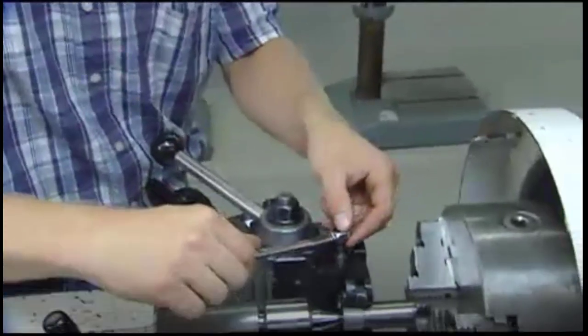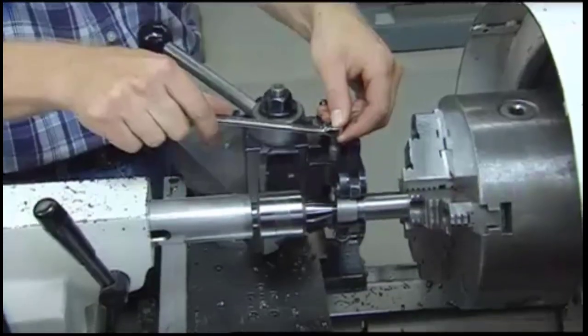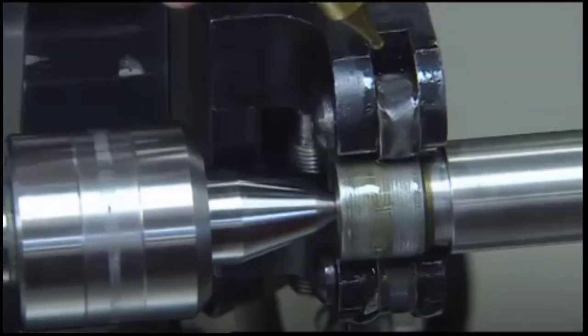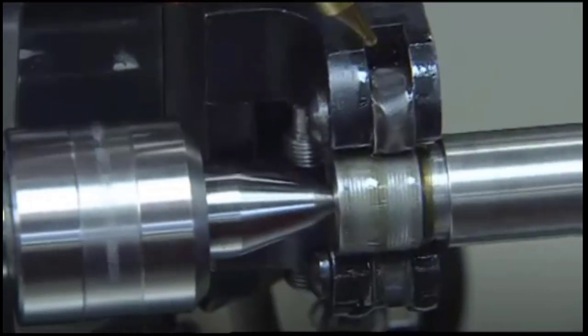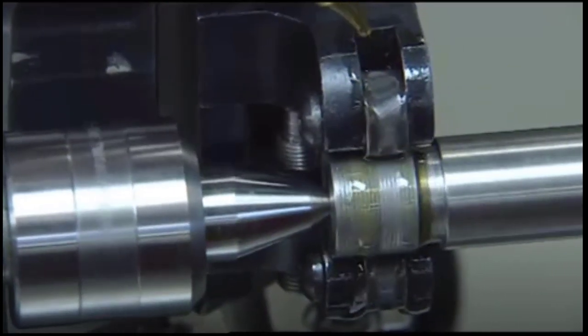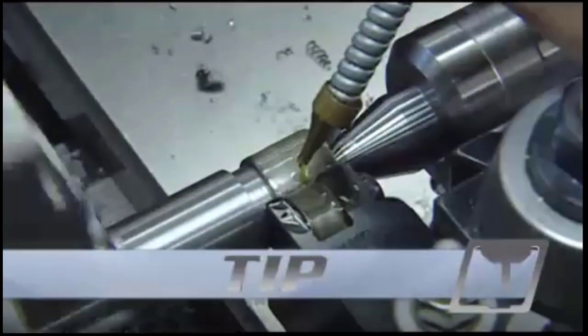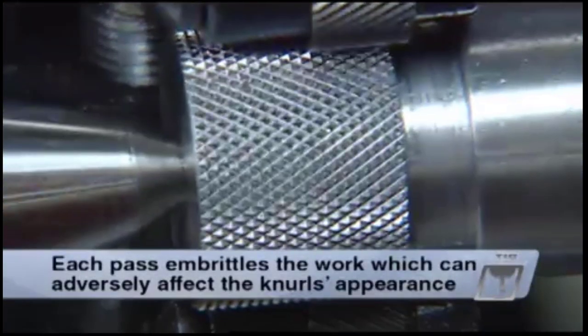In some cases, it may be necessary to apply more pressure and reverse the feed direction, allowing the knurling tool to make one or more additional passes in order to achieve the proper form. However, try to use as few passes as possible to form the full knurl. Each pass embrittles the work, which could adversely affect the appearance of the knurls.